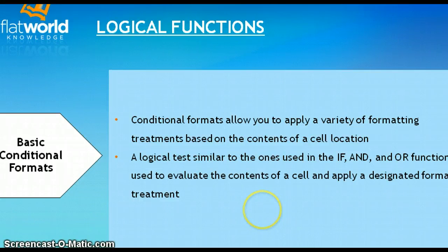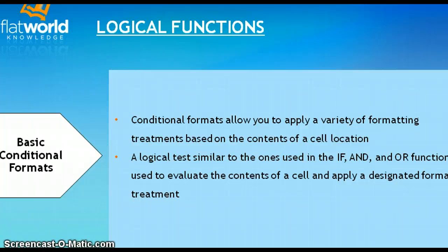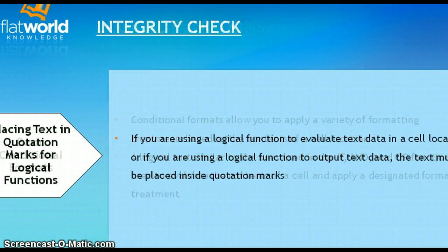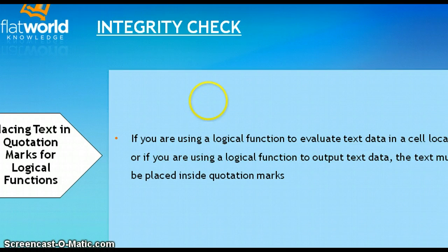Conditional formatting allows you to format cells based on the contents of a cell location. You can use logical tests to do that. For example, if the answer is true, shade the cell green; if the answer is false, shade the cell blue. That's a basic example, but that's essentially how a conditional format works — it applies formatting treatments to various cells based on an argument using AND, IF, or OR.